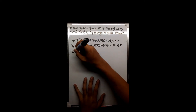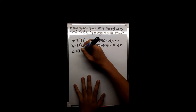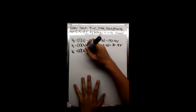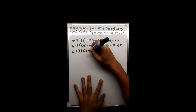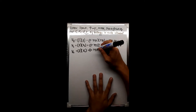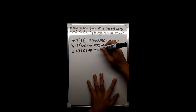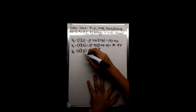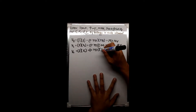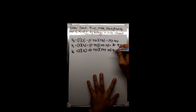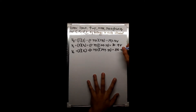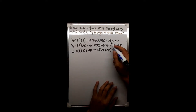For the voltage across the capacitor, we have the current times the capacitive reactance: 0.733 amperes times 294.73 ohms gives a voltage across the capacitor equal to 216.03 volts.